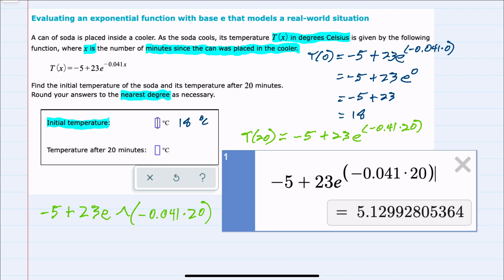This returns a value, and since we are rounding to the nearest degree, we can look at the first decimal place. Since that is a 1, we will not round up. So our temperature in 20 minutes would be 5 degrees Celsius. Thank you very much.